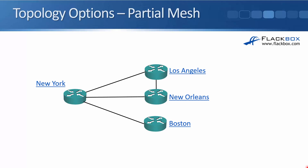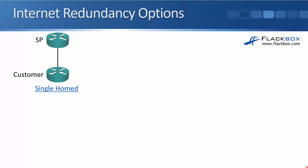Those were the WAN topology options. Now let's look at a related topic: internet redundancy options. In offices, companies will want internet connectivity. The first option is single-homed, where the customer router is connected to a service provider router with a single link. The obvious potential issue is the single point of failure — if either router fails or if the link fails, the customer will lose internet connectivity at that site.